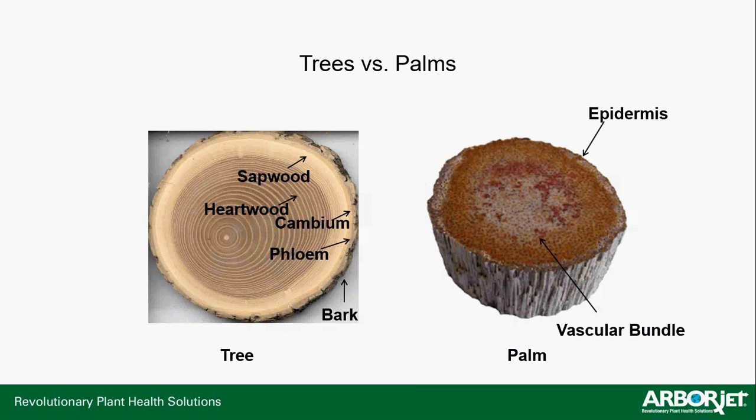The key difference between a tree and a palm is that a tree is a dicot — it puts out growth rings and compartmentalizes in the trunk. A palm is a monocot — it won't compartmentalize. In a palm, all your xylem and phloem are intermingled in the vascular bundle in the center of the trunk. Palms hold a lot of water, so when you're getting a lot of rain, you may want to wait for the palm to dry out a little before injecting, as high moisture creates a lot of positive pressure.